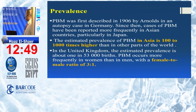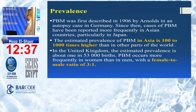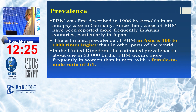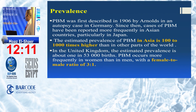Pancreatobiliary maljunction is a very rare condition, first described by Dr. Arnold in 1906 in autopsy cases in Germany. Since then, cases have been reported more frequently in Asian countries, particularly in Japan. The estimated prevalence in Asia is 100 to 1,000 times higher than in other parts of the world. In the United Kingdom, the estimated prevalence is about one case in 53,000 births. Pancreatobiliary maljunction occurs more frequently in women than men, around three to one.